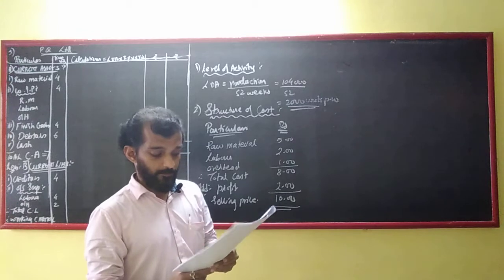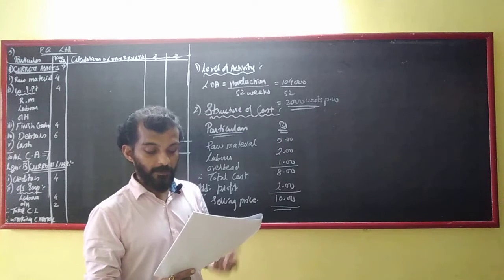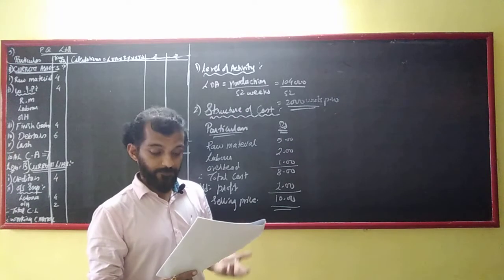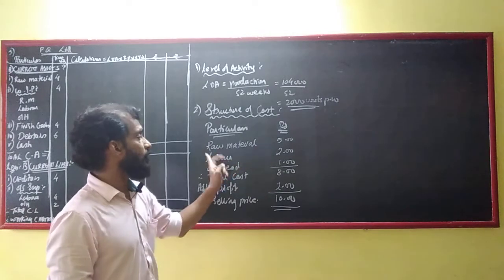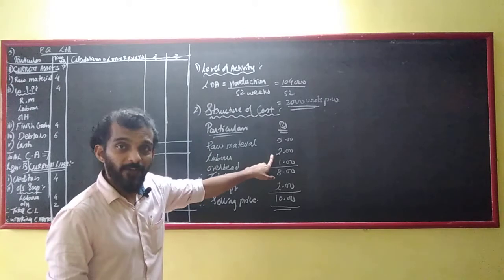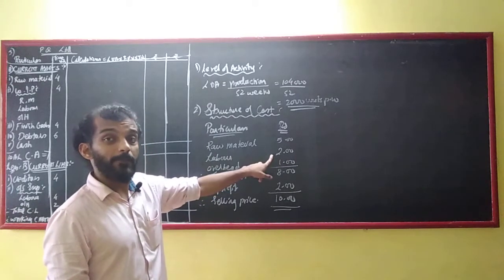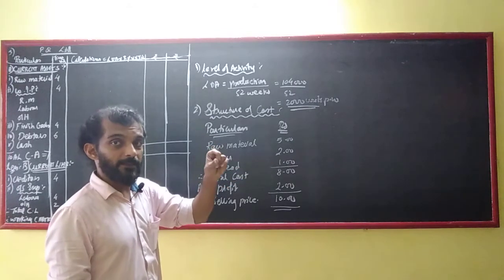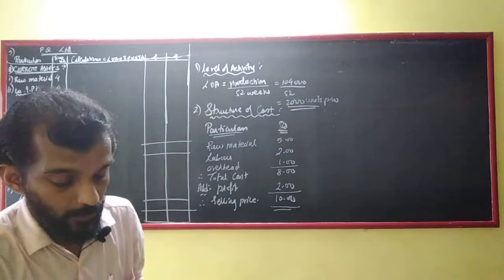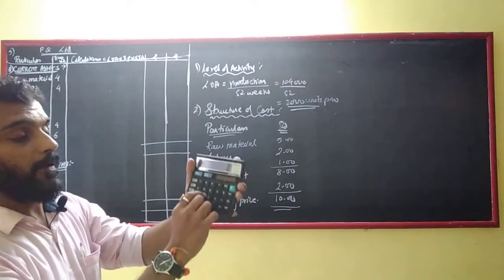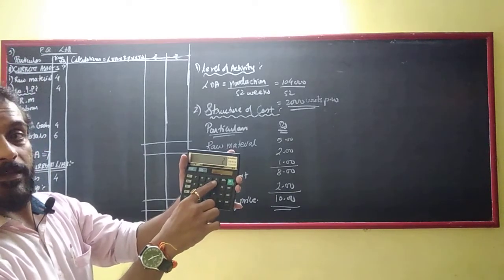Cost of material per unit is rupees 5. Cost of labour per unit is 40% of material. Cost of overhead per unit is 50% of labour. Let me calculate: material is 5, 5 x 40% comes to 2 rupees for labour.